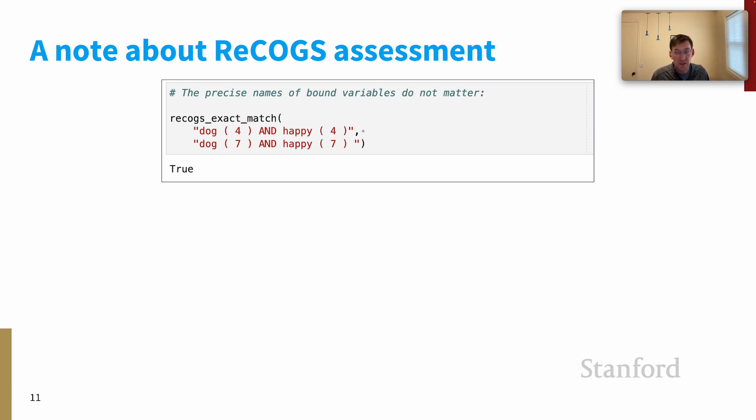For ReCOGS, unlike for COGS, the precise names of bound variables do not matter. So for example, these two logical forms here are called equivalent, even though the first logical form uses the variable four, and the second logical form uses the variable seven. The idea is that since all these variables are implicitly bound for ReCOGS and COGS, we don't care about their particular identity, just the binding relationships that they establish.